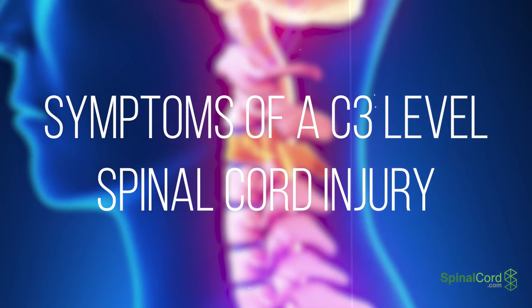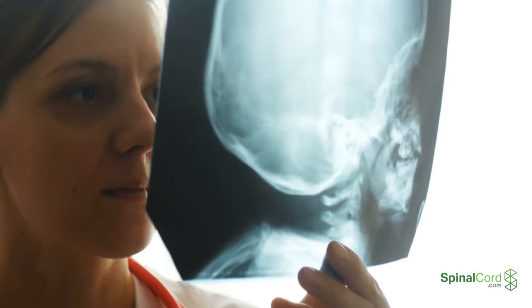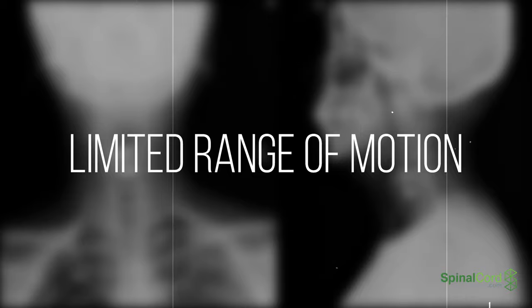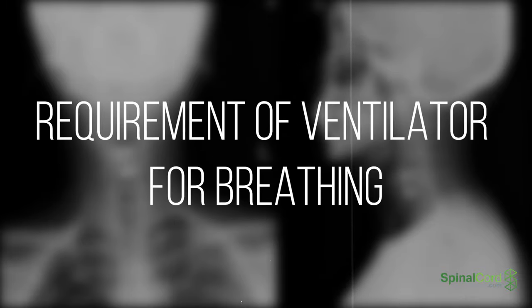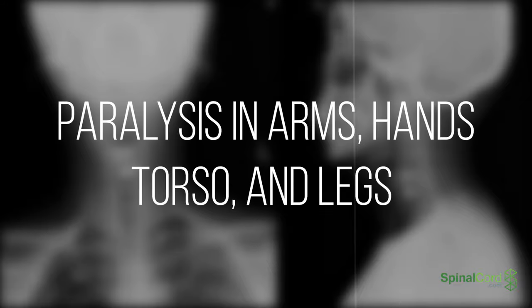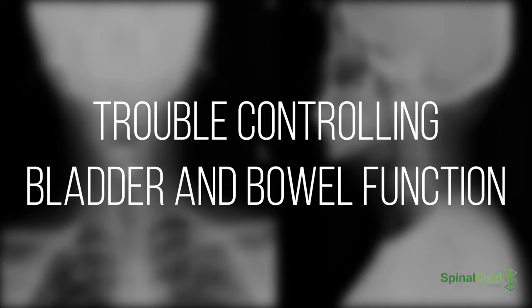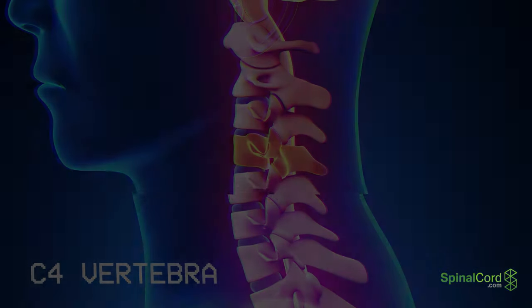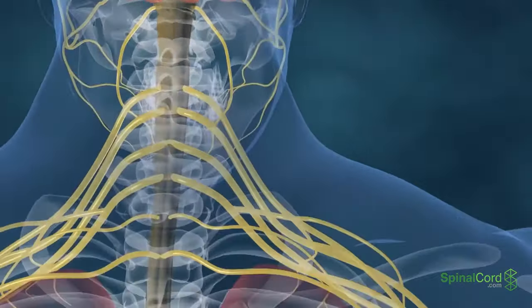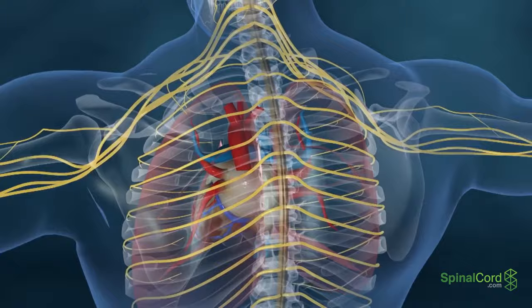Symptoms of a spinal cord injury corresponding to the C3 vertebrae include: limited range of motion, loss of diaphragm function, requirement of a ventilator for breathing, paralysis in arms, hands, torso and legs, and trouble controlling bladder and bowel function.